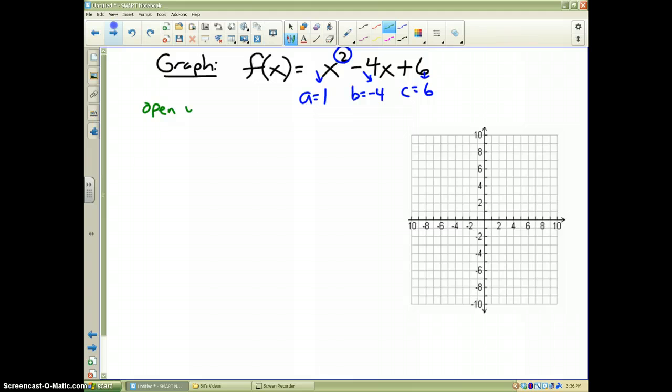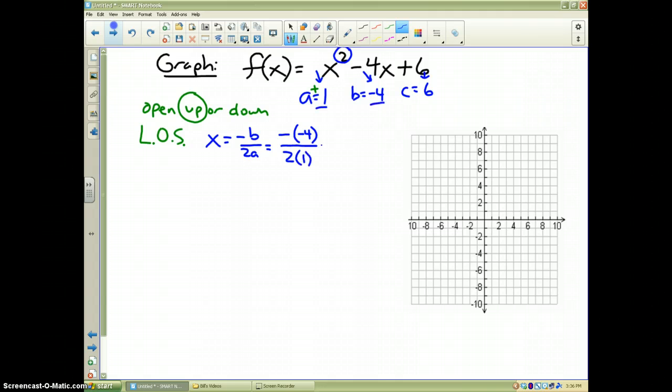Now we're going to answer a bunch of questions in order to graph this. The first question, does the graph open up or down? Well, since the a value is positive, it's going to open up. That helps us. The next thing we need to figure out when we graph is we've got to find the line of symmetry. And from the prior slide, I told you the line of symmetry is equal to x equals negative b over 2a. Well, b is negative 4, so I have a negative of a negative 4 divided by 2 times whatever a is. And a negative of a negative is positive 4. 2 times 1 is 2. And I get x equals 2. We know x equals 2 is a vertical line. So there is my line of symmetry on my graph.